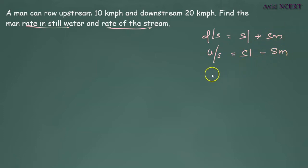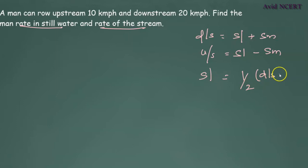With these two formulas, we can find rate in still water, which equals one-half times downstream plus upstream, and rate of stream equals one-half times downstream minus upstream.